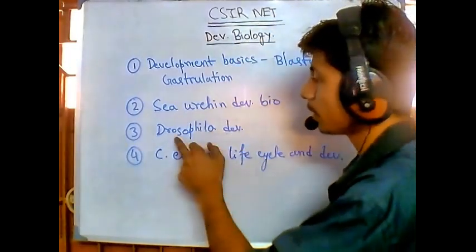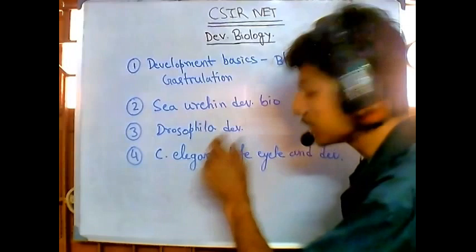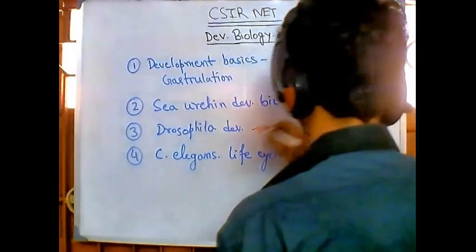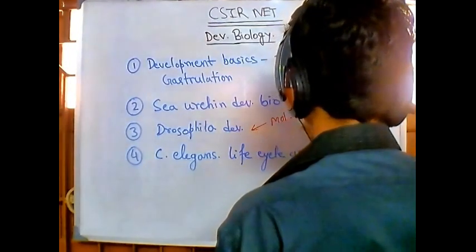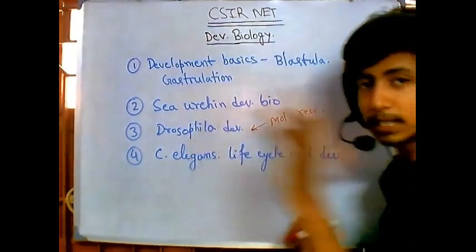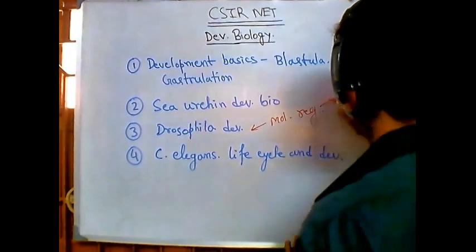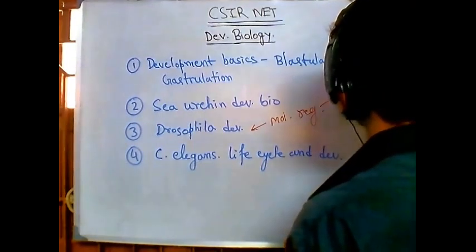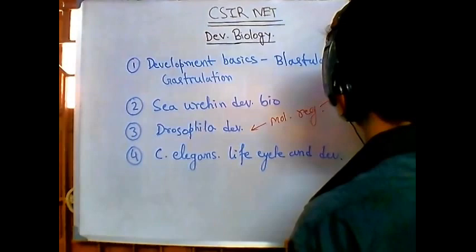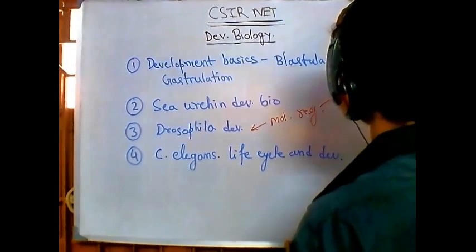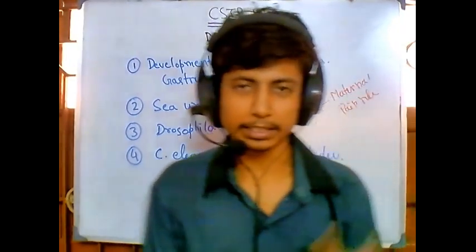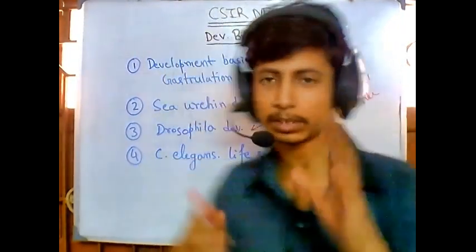Then comes the developmental biology of Drosophila, and especially the molecular regulation of development in Drosophila. This is very important, covering certain genes like maternal genes and pair-rule genes. These are key examples — maternal inheritance genes, pair-rule genes — and you need to understand all of these from Drosophila developmental biology.